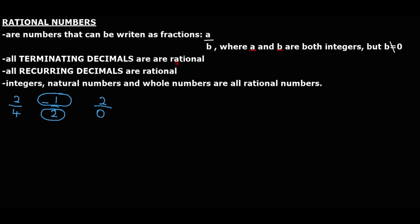All terminating decimals are rational numbers. For example, 0.5 is a terminating decimal — it equals one half, which is a fraction. Similarly, 1.25 is a terminating decimal equal to one over eight. Because these can be expressed as fractions with integers, all terminating decimals are rational numbers.